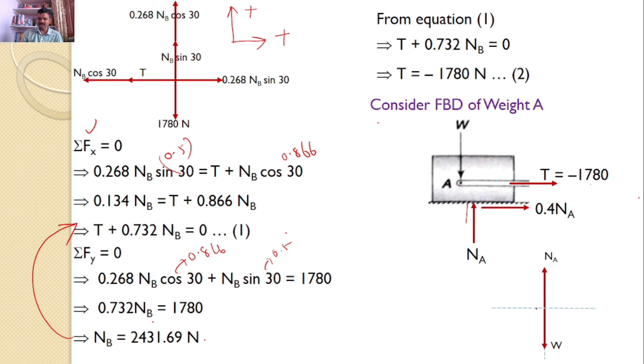Now, I will transfer all those forces onto a separate XY plane. Weight W is acting downwards, NA is acting upwards, and 0.4 NA is towards right side, and the T value minus 1780 is towards right side.